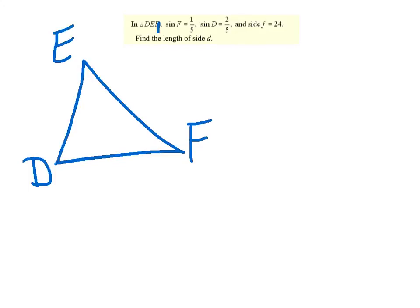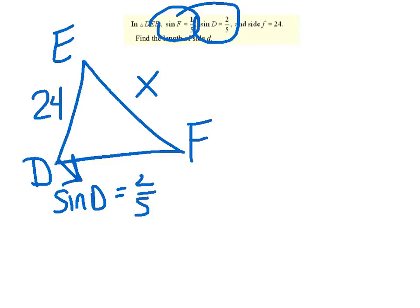All right. I've got an odd-looking one for you. It says in triangle D, E, F. So let's stop, draw a sketch. D, E, F. Notice they tell me the sine of F, and they tell me the sine of D. And then they tell me side F. Well, I'm going to put side F in right away. That's 24. And they want me to find side D. So I'm going to put an X there. Now, notice they didn't give me the angles. They gave me the trig functions. So I'm not actually going to say that's the angle. I'm actually going to write down the sine of D equals 2 fifths. And the sine of F there equals 1 fifth.